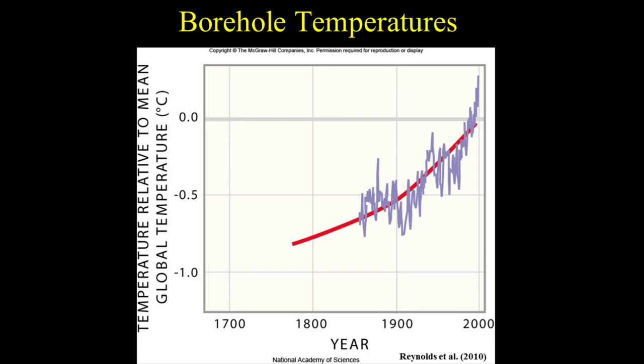Here is a global temperature reconstruction of the last century obtained from borehole data. Borehole data are direct measurements of temperatures from boreholes drilled into the Earth's crust. Departures from the geothermal gradient can be interpreted in terms of past surface temperature changes. A majority of the borehole data at the World Data Center are from the University of Michigan's Global Database of Borehole Temperatures and Climate Reconstructions.